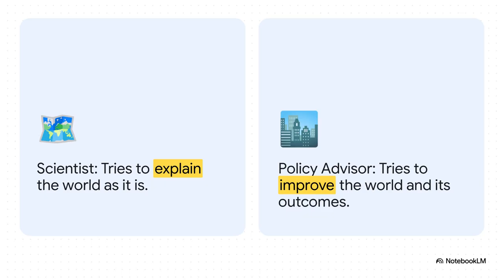Think about it like this. The economist as a scientist is kind of like a mapmaker — they're just describing the terrain. Here are the mountains, here are the rivers, here's what the land looks like. But the economist as a policy advisor is more like a city planner. They look at that same map and say, we should build a bridge right here, or this whole area ought to be a park. One describes what is, the other prescribes what should be.